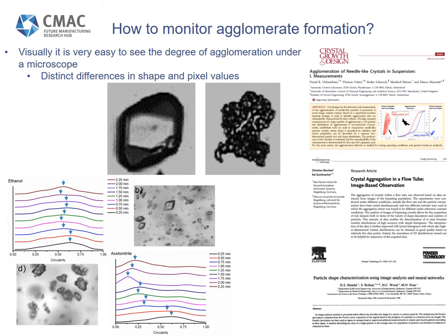The particle descriptors calculated give an indication of particle shape and can change during an agglomeration process. For example, in the graphs shown here we see the change in the distribution of particle circularity with time for two different solvents. High circularity would indicate more single crystallite particles. For non-agglomerating solvents such as ethanol, the mode of this distribution does not change significantly. But for something like acetonitrile, where we see large agglomerates forming in the images, we see a drastic shift in the mode of this distribution.